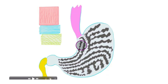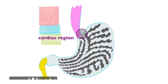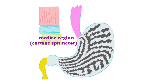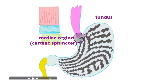The stomach lies immediately below the diaphragm. Its regions are: the cardiac region, which is right next to the heart, featuring a cardiac sphincter that helps prevent backflow of chyme into the esophagus. The bolus passing through the esophagus turns into chyme once it enters the stomach.